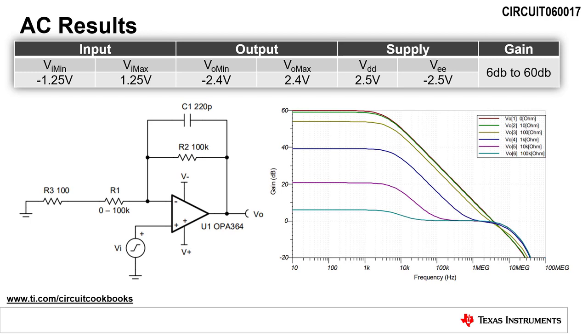Running an AC sweep analysis for multiple values of R1, we find that the gain varies from 6 dB to 60 dB. Also, notice that the cutoff frequency of the circuit remains constant for all gains. This verifies functionality of the circuit.